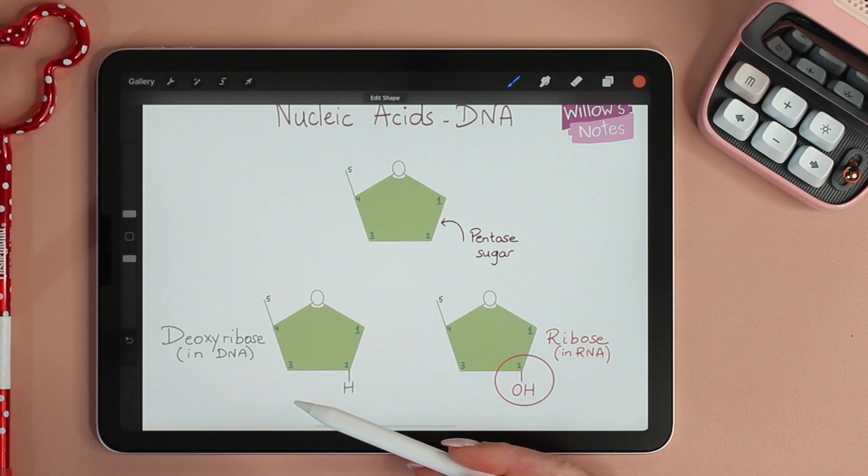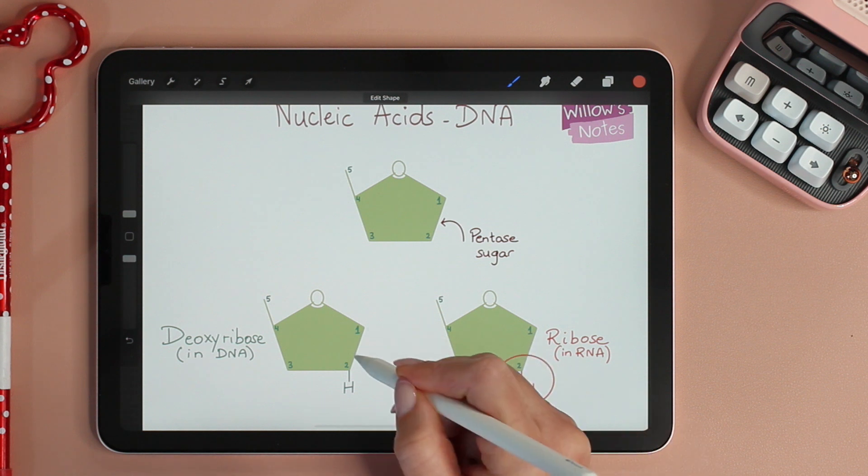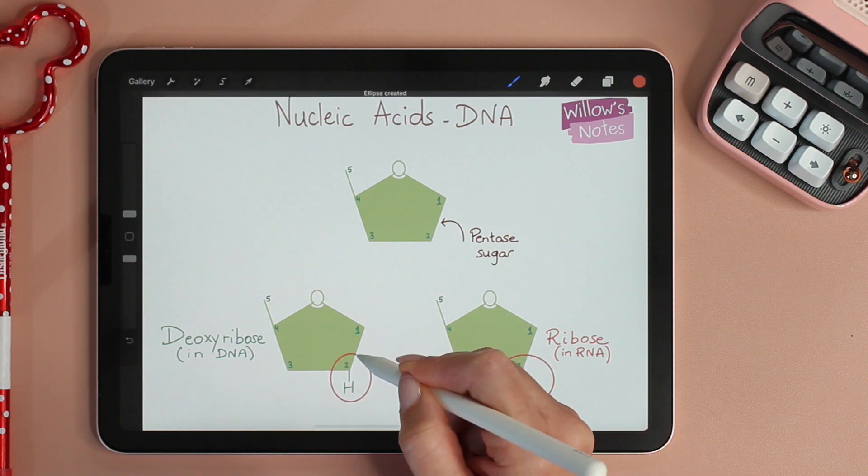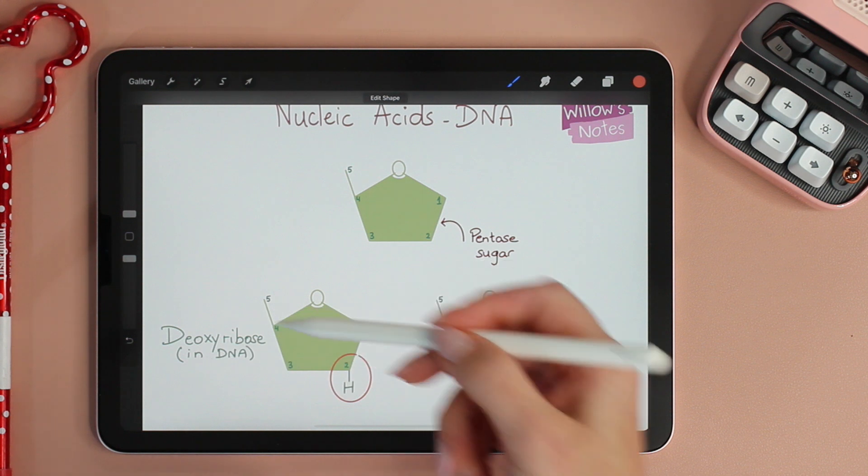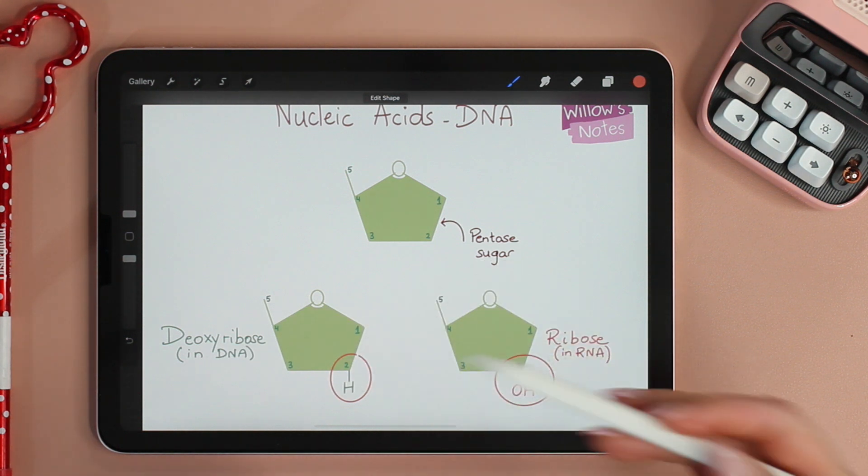If we look over to the sugar in DNA, it is missing one oxygen, hence the name deoxyribose, meaning a ribose missing an oxygen.